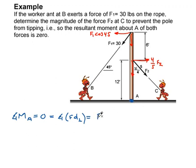So we have F1 cosine 45 times its perpendicular distance, which happens to be 12 plus 6, 18.